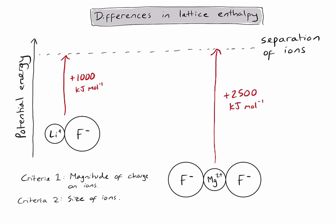To explain it, let's check our two criteria again. First of all, criteria one. What you'll notice if I compare lithium and magnesium is that magnesium has double the amount of positive charges as lithium. This means about double the electrostatic attraction with the fluoride ions, so that kind of explains why it takes so much more energy to separate.